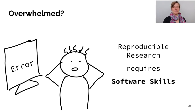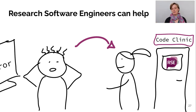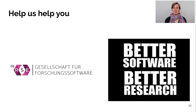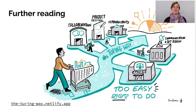Reproducible research requires software skills, but I think there is a solution: we need people who specialize in these things — reproducible research and open science. Research software engineers are the key — people who really know a lot about software and these technical tools. This is what I imagine for the future of science: people who help with these tasks. So help us help you by joining the movement of research software engineers. There's an association in Germany called Gesellschaft für Forschungssoftware, and there are associations in many other countries. The motto is: better software, better research.